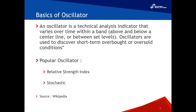An oscillator is an indicator that varies over time within a band, above and below certain levels. It will tell you two levels: overbought and oversold. This is closely related to support and resistance. If you apply them together, it should give you positive results in your trading. We'll focus on two only: RSI and Stochastic.